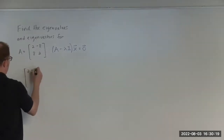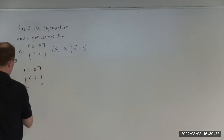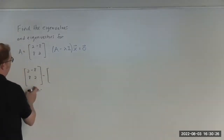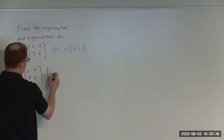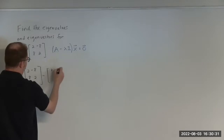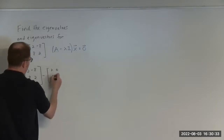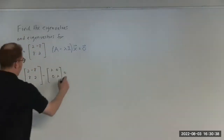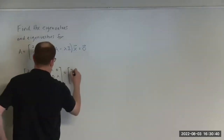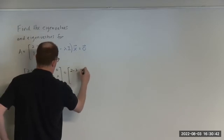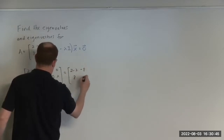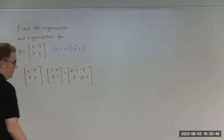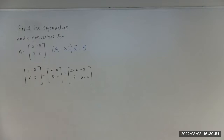So we have 2 minus lambda, negative 8, 8, and 2 minus lambda. This is a 2 by 2 matrix, so the identity matrix I has to be 2 by 2. Lambda times I₂ gives us that. So we end up getting the matrix with entries (2−λ), −8, 8, and (2−λ). There's the matrix for this particular system — that is the coefficient matrix.